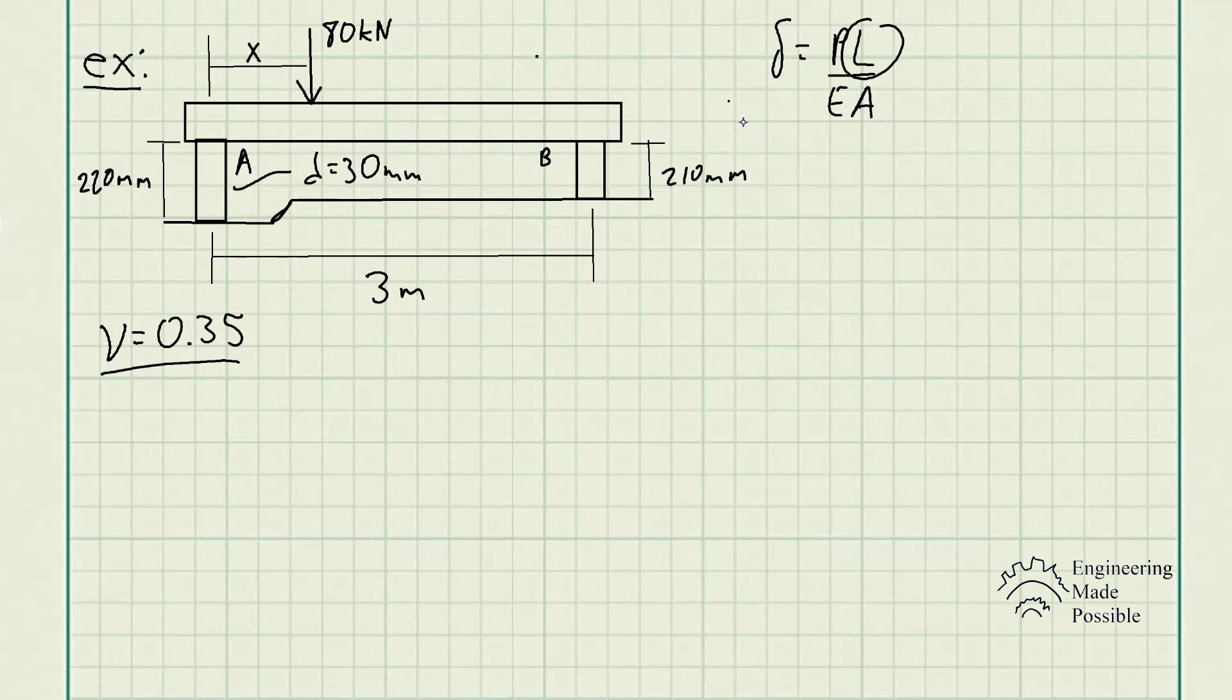This is where we utilize the relationships that we know. To keep this beam horizontal, the deformation of cylinder A and cylinder B have to be the same. So the deformations of both cylinders A and B are equivalent. Using the deformation equation, we have PA times LA divided by the modulus of elasticity times the cross-sectional area. The modulus and cross-sectional area are the same, so they cancel out.